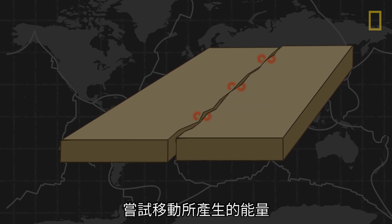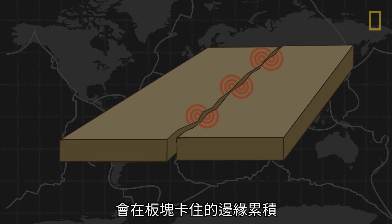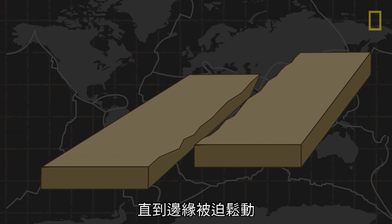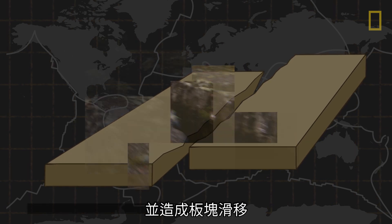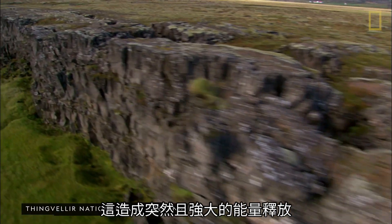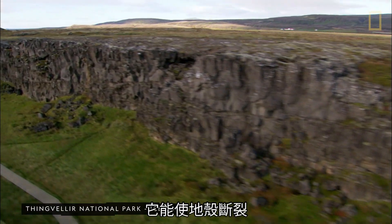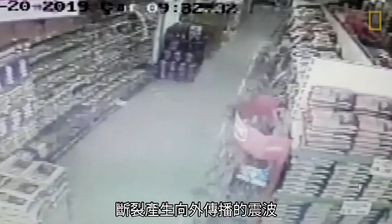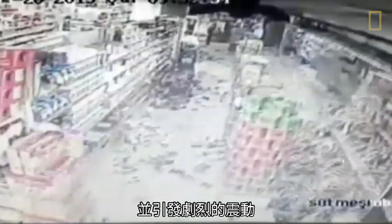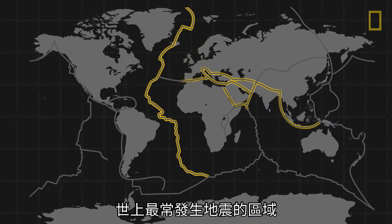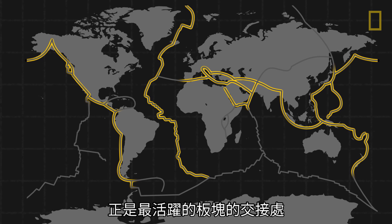Energy from this attempted movement builds around the edge's sticking point, creating immense pressure until the edges are forced to let go and the plates slip. This causes a sudden and powerful release of energy, so powerful that it breaks the Earth's crust. This fracturing emits shockwaves through the ground and causes intense vibrations, or quakes. The world's most earthquake-prone regions are where the most geologically active plates meet.